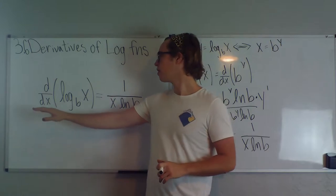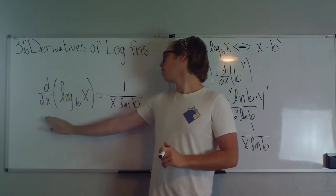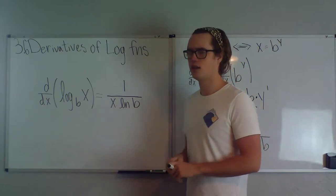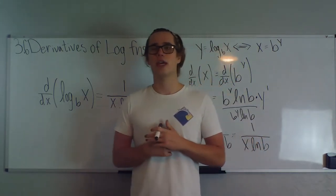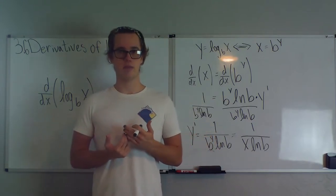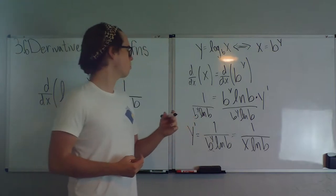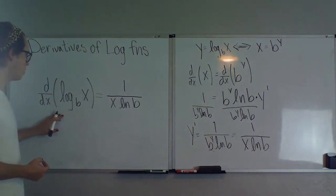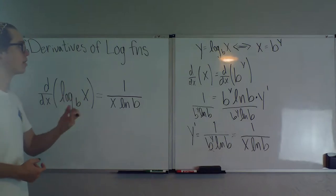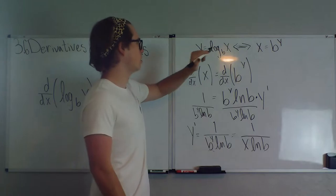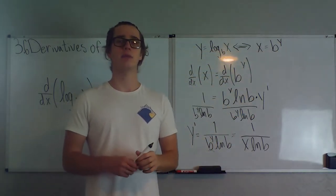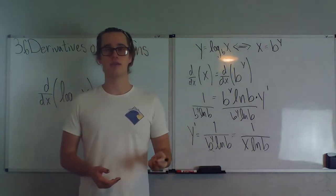We start with this equation: the derivative of log base b of x is equal to 1 over x ln b. To derive this, we have to implicitly differentiate. We start with y equals log_b(x), which is equivalent to x equals b to the y, because exponentials are the inverses of logs.